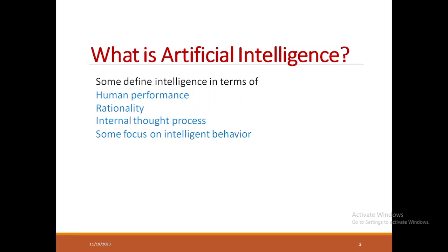When we talk about intelligence on a common sense basis, we have 4 different parameters to judge whether a human is intelligent. The first one is performance, second one is rational thinking — a thinking which is purely on the basis of truth — third one is internal thought process, and fourth one is intelligent behavior. On the basis of these 4 parameters, let us define what is artificial intelligence.